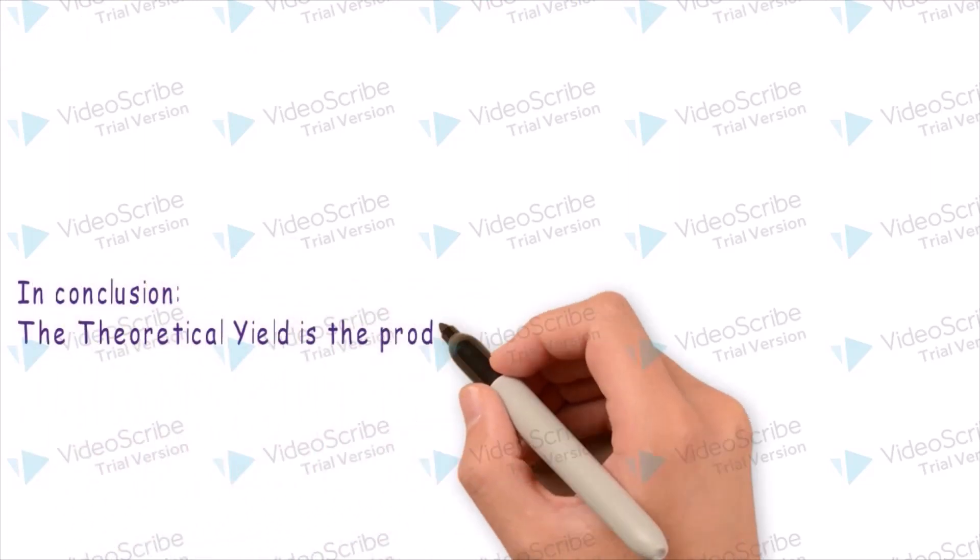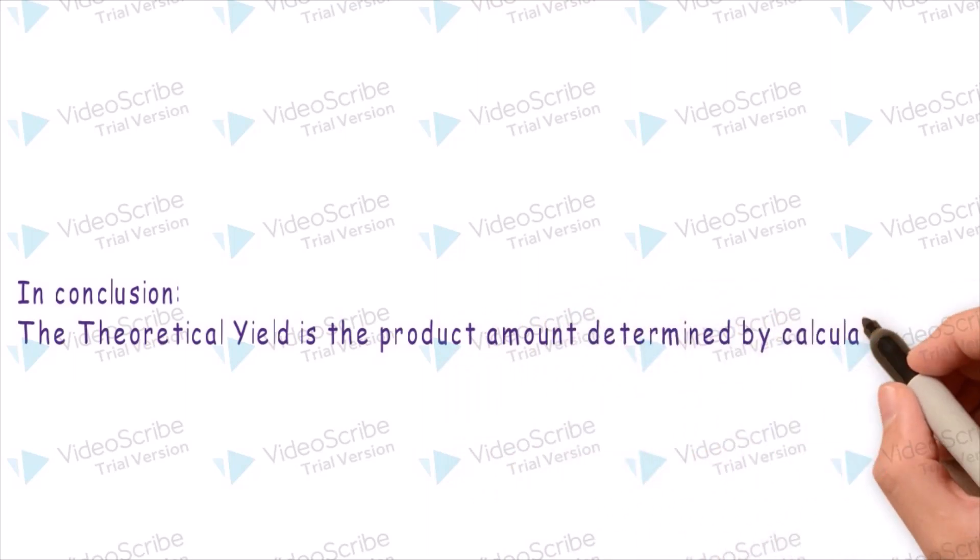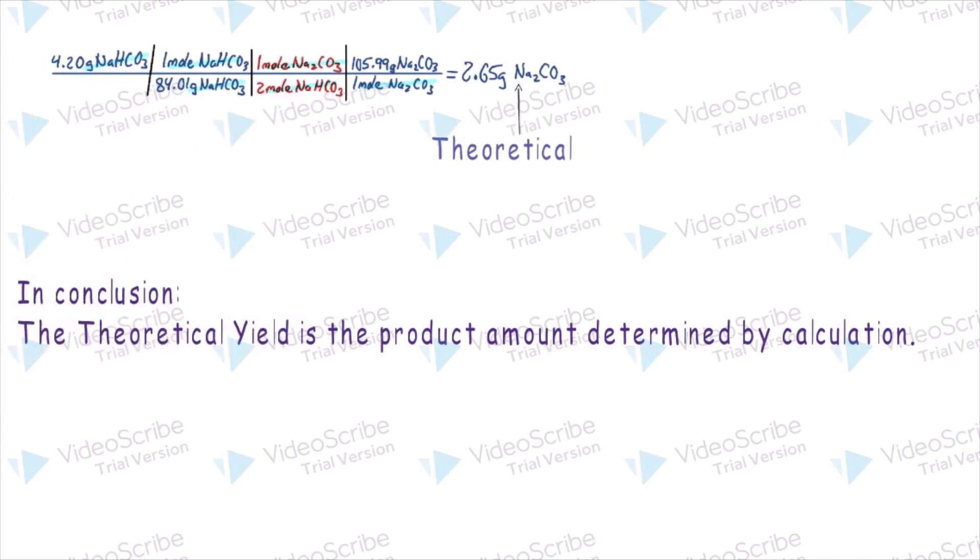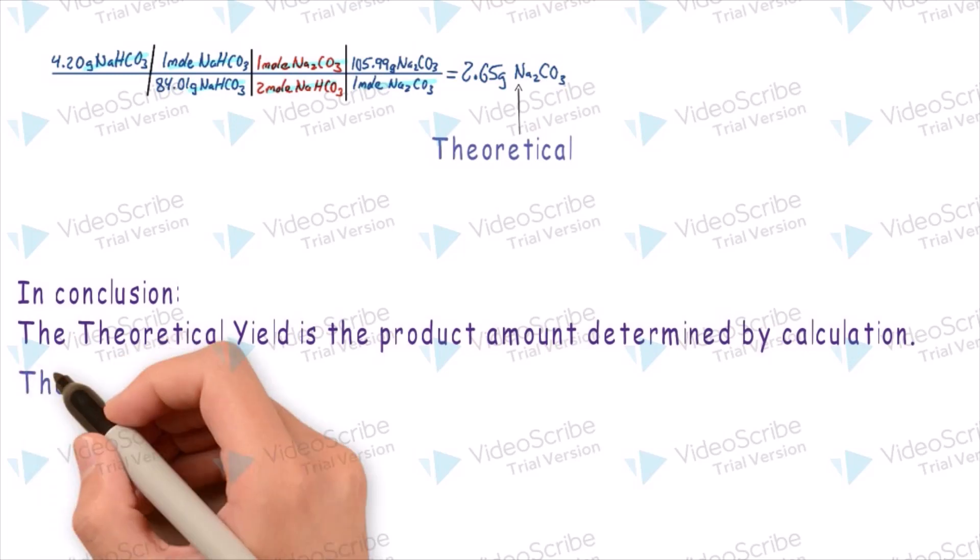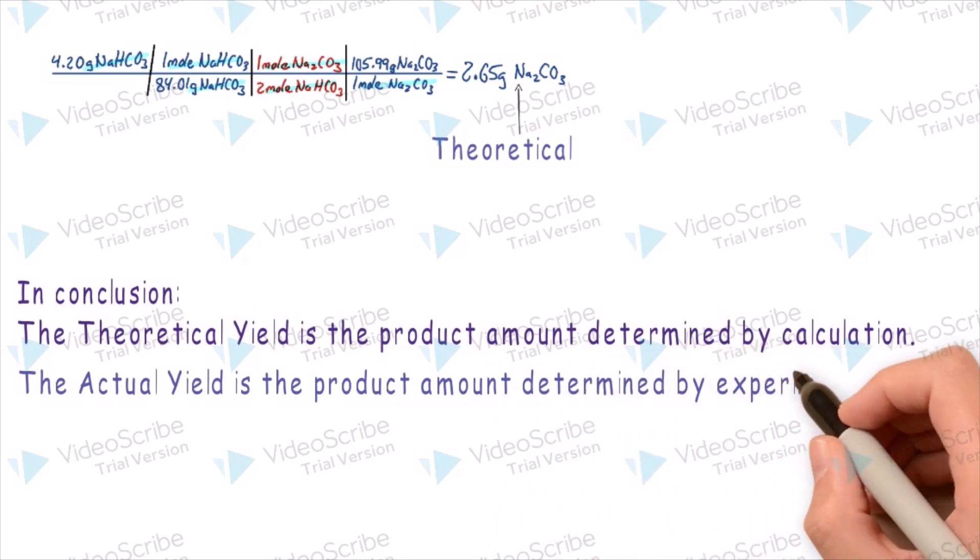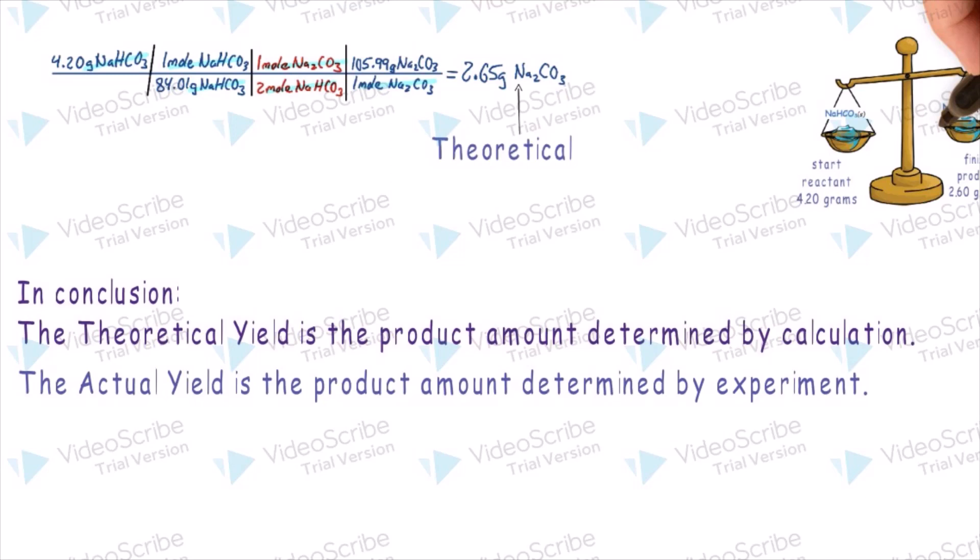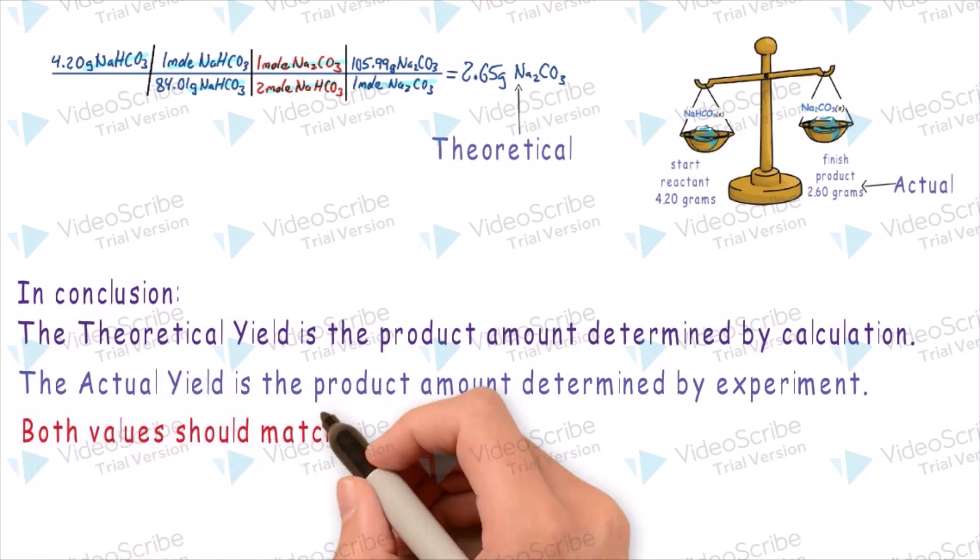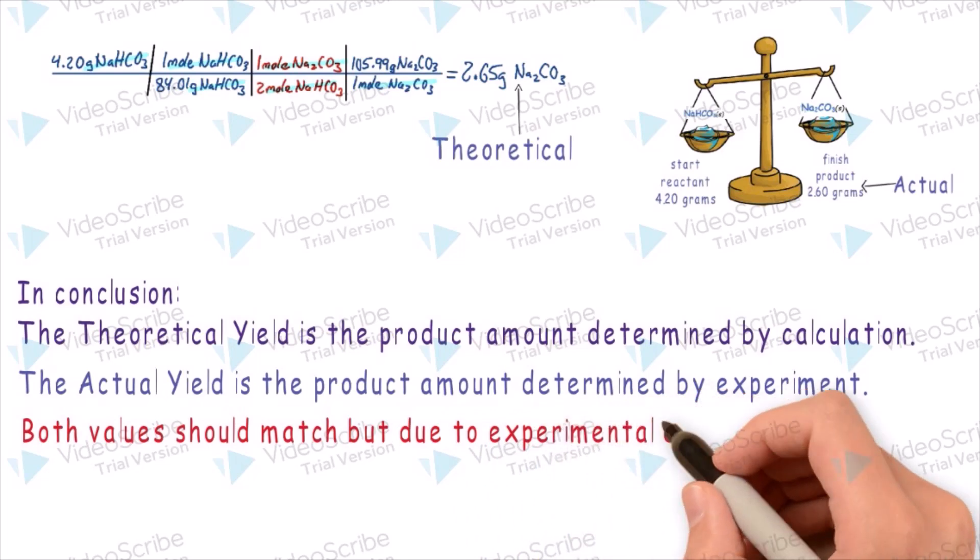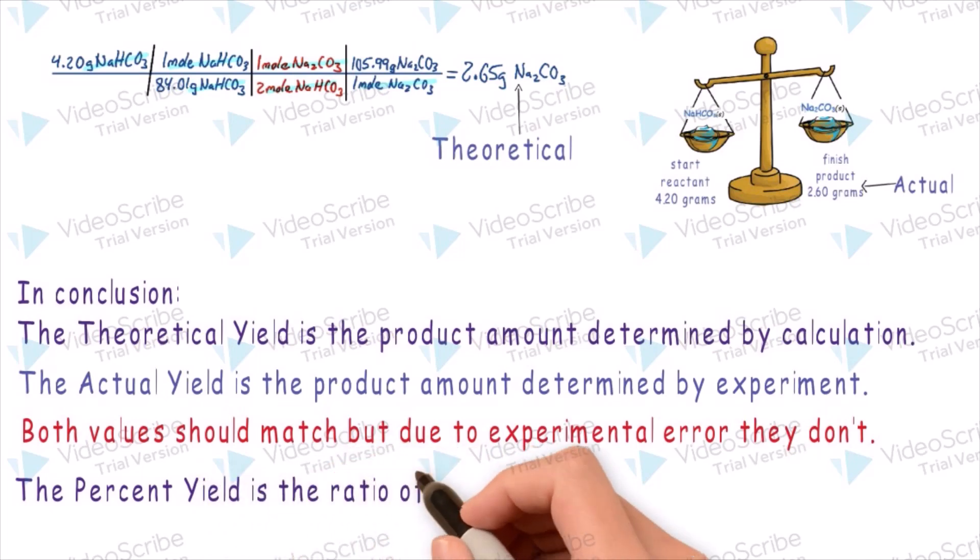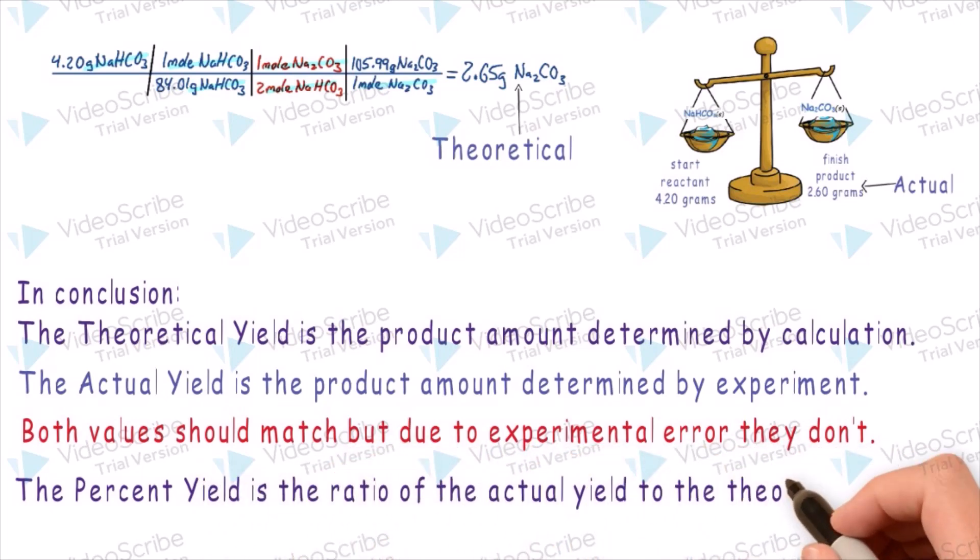In conclusion, the theoretical yield is the product amount determined by calculation. The actual yield is the product amount determined by experiment. Both values should match, but due to experimental error, they don't. The percent yield is the ratio of the actual yield to the theoretical yield.